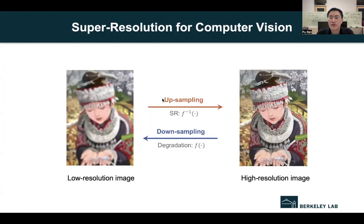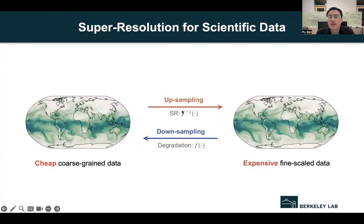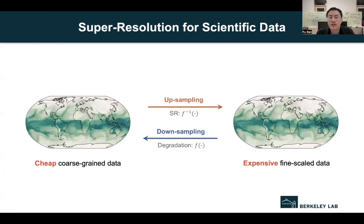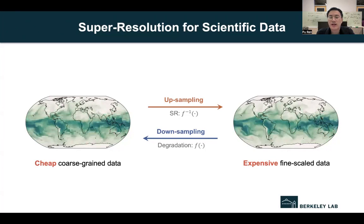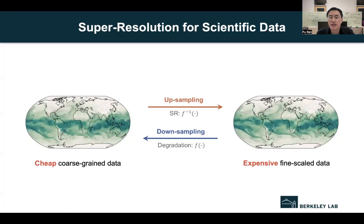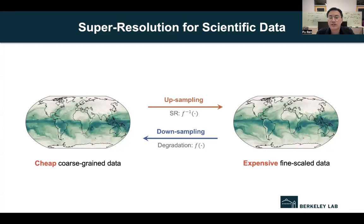Our research focuses on the super-resolution of scientific data. Super-resolution is an image processing technique to enhance the image resolution and details. It aims to generate a higher-resolution version of images from lower-resolution input images, improving clarity, sharpness, and fine-scale details. For scientific data, we have a similar problem: generating coarse-grained simulation data is very cheap, but simulating fine-scale scientific data is numerically expensive. So can we utilize the idea of super-resolution to improve the quality of scientific data based on coarse-grained simulations? This is an active research area in scientific machine learning.